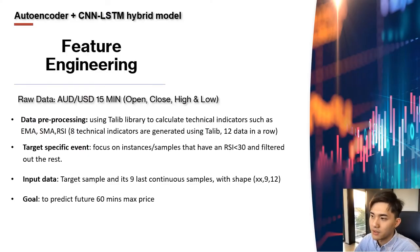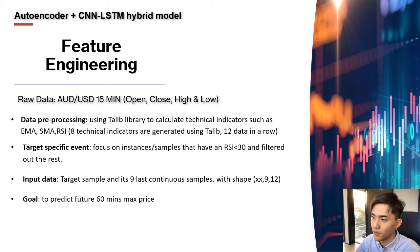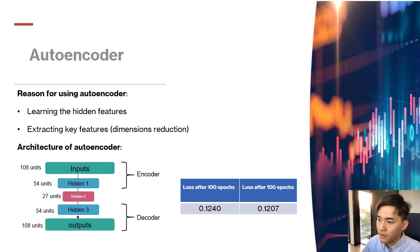This model is an autoencoder plus CNN-LSTM hybrid model. The raw AUD-USD data has four columns, so we use TALIB to calculate technical indicators including EMA, SMA, and RSI — generating eight technical indicators, resulting in 12 columns after pre-processing. For the target-specific event, as we are doing event-driven prediction, we only focus on samples with RSI less than 30 and drop the rest. We batch the target sample and its last nine samples together with a three-dimensional shape. This batch is used to predict the future 16-minute high price. The autoencoder serves as a feature extractor, learning hidden patterns and extracting key features, similar to dimensionality reduction.